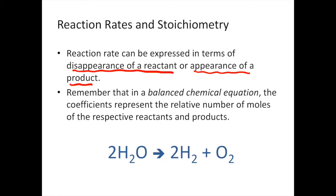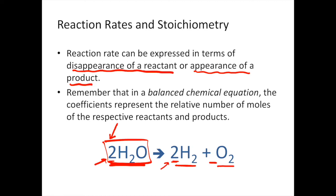This goes back to stoichiometry — the coefficients give us relative amounts of reactants and products. This balanced reaction tells us: for every two moles of H₂O used up, we make two moles of H₂ and one mole of O₂. The rate of disappearance of H₂O equals the rate of appearance of H₂ because their coefficients are the same. You'll use up H₂O faster than you make O₂ — two moles of water for every one mole of oxygen.